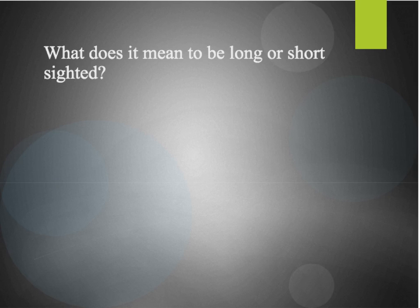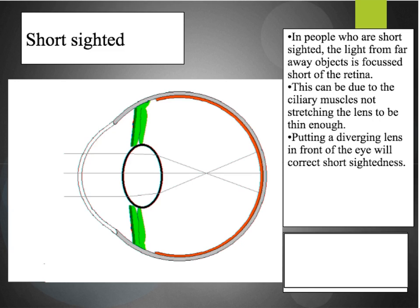What does it mean to be long or short-sighted? If you are long-sighted, you are only able to focus on images that are a long way away — images that are much closer will appear blurry — and vice versa for short-sightedness. For people with short-sightedness, the light from far away objects is focused in front of the retina. This can be due to the ciliary muscles not stretching the lens to be thin enough, so the lens remains in a fat position. Because the focal point is in front of the retina, the image seen by the person is blurry.